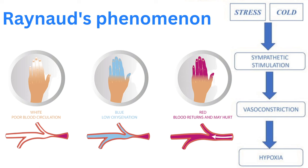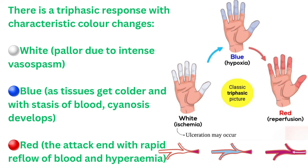A distinctive feature of Raynaud's phenomenon is the triphasic response accompanied by specific color changes. The first phase involves intense vasospasm, leading to a pallor or white coloration. The second phase occurs as tissues grow colder and blood stagnates, resulting in a bluish hue or cyanosis. The final phase is marked by a red color as blood rapidly flows back, followed by hyperemia.